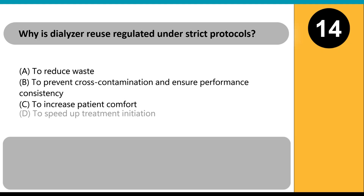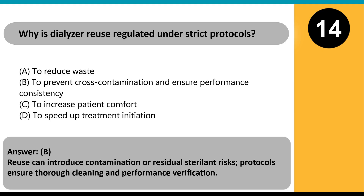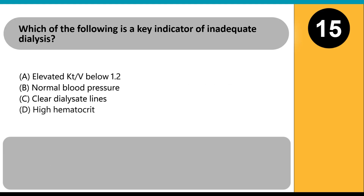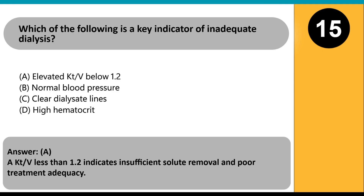Why is dialyzer reuse regulated under strict protocols? A. To reduce waste. B. To prevent cross-contamination and ensure performance consistency. C. To increase patient comfort. D. To speed up treatment initiation. Answer B. Reuse can introduce contamination or residual sterilant risks; protocols ensure thorough cleaning and performance verification. Which of the following is a key indicator of inadequate dialysis? A. Elevated KT/V below 1.2. B. Normal blood pressure. C. Clear dialysate lines. D. High hematocrit. Answer A. A KT/V less than 1.2 indicates insufficient solute removal and poor treatment adequacy.